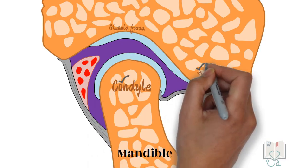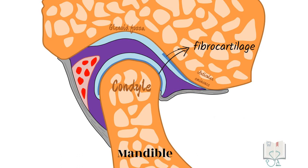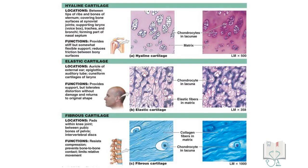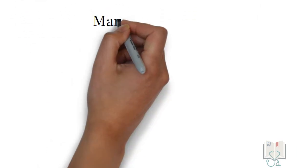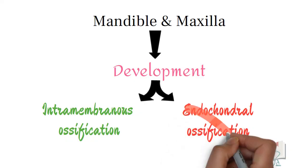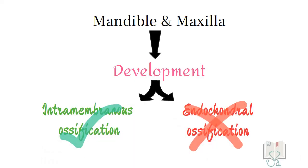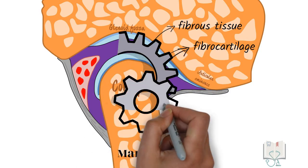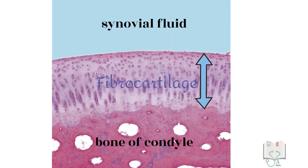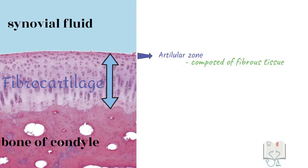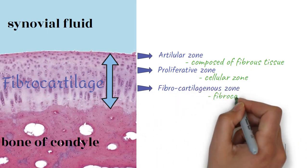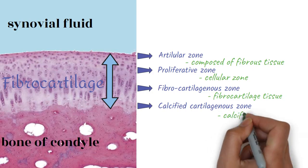Finally, the articular surfaces: both articular surfaces of the condyle and articular eminence are covered by fibrocartilage, and that of the glenoid fossa by fibrous tissue. Generally, synovial joints have hyaline cartilage, but the temporomandibular joint has fibrocartilage. This is because both the mandible and maxilla do not develop from endochondral ossification but by intramembranous ossification. Moreover, fibrocartilage is able to withstand the constant pounding forces of mastication. Four distinct layers are described of this fibrocartilage covering: the articular zone, a superficial layer of fibrous tissue formed of collagen fibers; the proliferative zone, a thin cellular zone just above the bone; the fibrocartilaginous zone, formed of fibrocartilage; and a calcified cartilage zone.